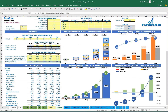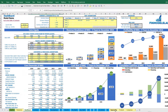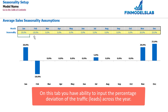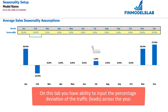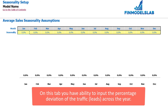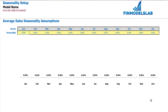You can also set up seasonality of your sales. For example, if January has a 20% seasonality, your average annual sale will be impacted by 120%. If February is minus 10%, you multiply your average monthly sale by 90%. If you don't need any seasonality, you can zero out these assumptions and there will be no seasonality adjustments within the model.